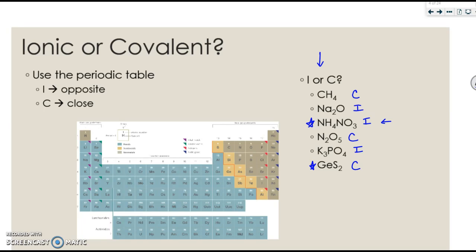And then the GeS2. Well, Ge is a semi-metal, so you might have been like, wait, what do I do? It's not a metal or a nonmetal. In general, our semi-metals act like nonmetals when they bond. Therefore, Ge is serving as a nonmetal, and S is also a nonmetal, so it's covalent.